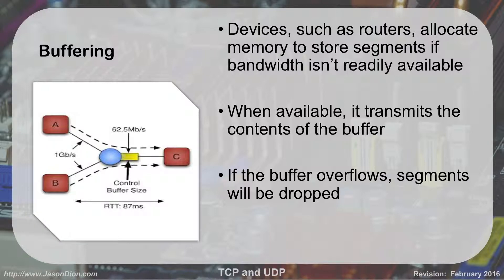Buffering — some devices like routers have memory that allocates the ability to store segments until bandwidth is ready. When bandwidth is available, it starts sending out the information in the buffer. If the buffer overflows, the segments will be dropped.